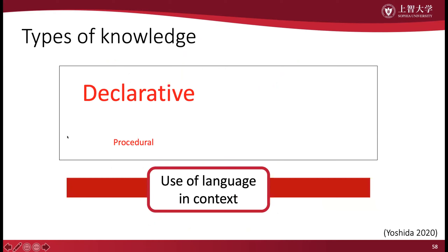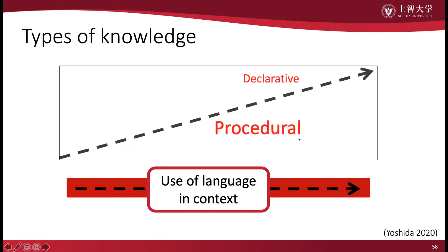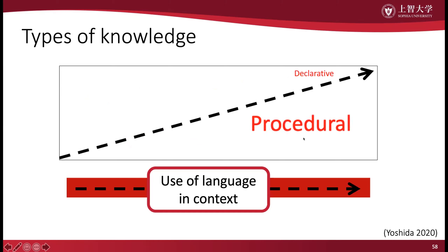You want to change declarative knowledge into procedural knowledge — the kind of knowledge that you can use in real life. And how do you do that? You have to use it in an in-context, communicative situation. The more you use declarative knowledge in a real-life communicative context, the more it changes to procedural knowledge. So all too often students are just trying to store information for use later, and the classroom may not be one-to-one with a real context. But we want to give students in-context, meaningful language use as much as possible.